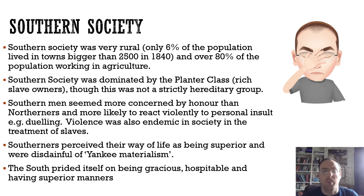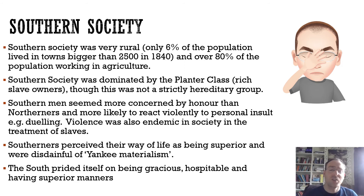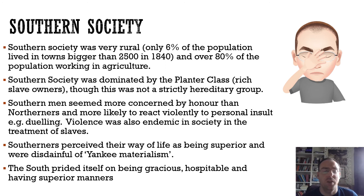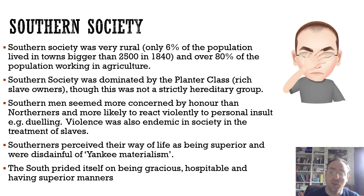Southern society is quite perplexing. It is very, very rural — only 6% of the population lived in towns bigger than 2,500 back in 1840, and over 80% of the population worked in agriculture. Southern society is dominated by the planter class — the super-rich slave owners who lived on the big plantations. They are not a completely hereditary group, but there are strong hereditary elements. Those planter families dominate government and society. Southern men seemed far more concerned with honour than their northern counterparts and far more likely to react violently to personal insults — they were renowned for duelling. Violence is also really endemic in society in the south, particularly visible in the treatment of slaves. So we have a very hierarchical society with planters at the top and slaves at the bottom, and a society which could be very violent.